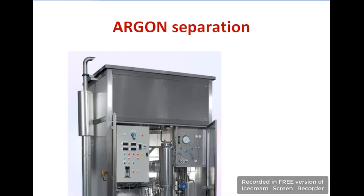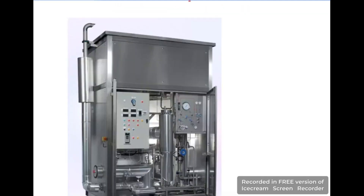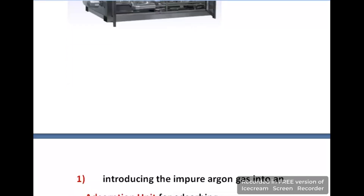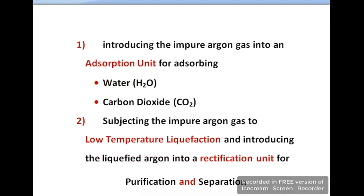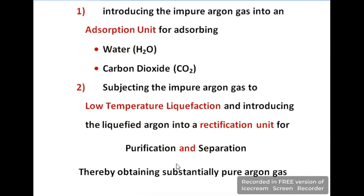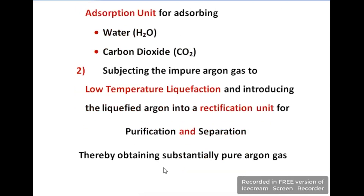Argon gas separation process takes place in a dedicated unit where impure argon gas is introduced. An absorption unit is provided which removes water and carbon dioxide from the impure argon gas. For further processing, the impure argon gas is treated by cooling and a low temperature liquid rectification process takes place. After this, the liquefied argon gas is introduced into a rectification unit where it is purified and separated to yield pure argon gas.